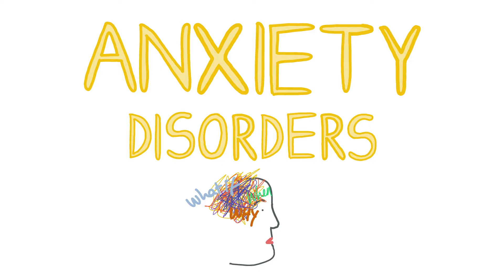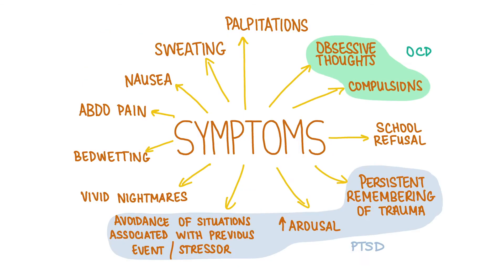Many anxiety disorders are common in children just like they are in adults. Children can have generalized anxiety disorders, although the somatic manifestations like abdominal pain, nausea, sweating and palpitations are more prominent in children. They can have phobic disorders too. Keep in mind that it is normal for children of preschool age to have specific fears and phobias which self-resolve. It's when these phobias persist that it becomes pathological.